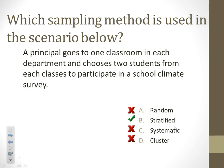A principal goes to one classroom in each department and chooses two students from each class to participate in a school climate survey. This is also stratified, because the principal made sure to go to each department to choose students, ensuring each department was represented.